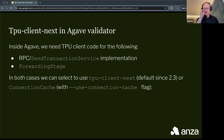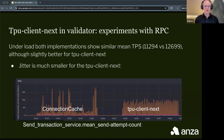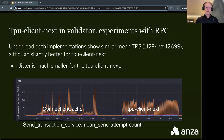Inside the validator, TPU Client Next is used in the transaction service and forwarding stage. We did some testing with RPC on testnet and observed that TPS for connection cache is slightly lower than for TPU Client Next. More importantly, the jitter is smaller for TPU Client Next. A screenshot shows how many send attempts were made on the transaction service side, and the traffic generated by the TPU Client Next version is smoother.